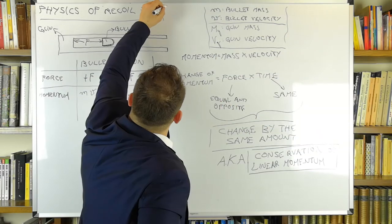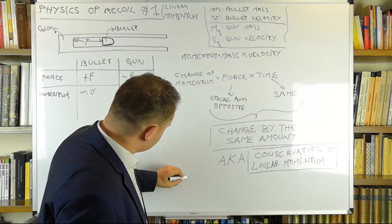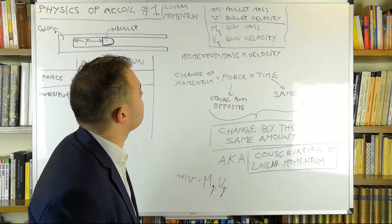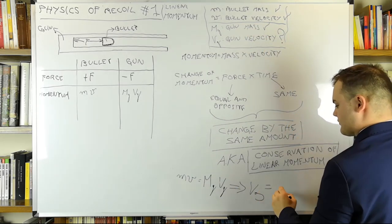This result is also known as conservation of linear momentum, and it is the foundation of today's lesson. We can indeed use it to easily calculate the velocity at which the gun recoils, which will be handy later.